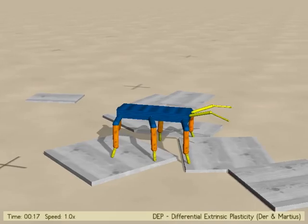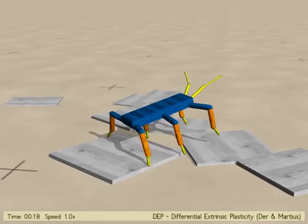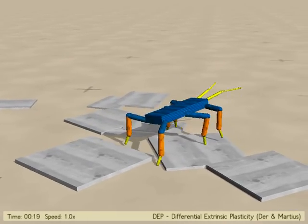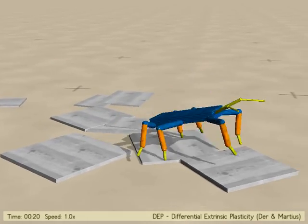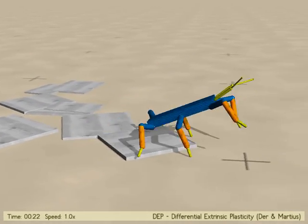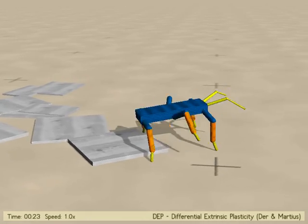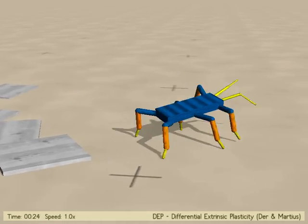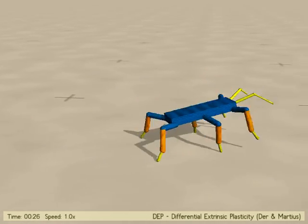Now we connect the same control network to a hexabot robot. After a very short time we observe the emergence of the first locomotion gait, here a synchronous tripod gait.